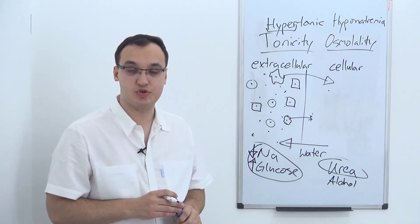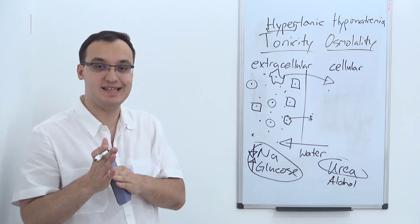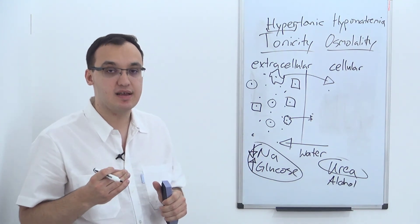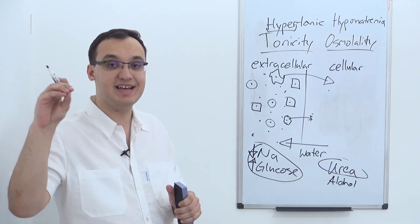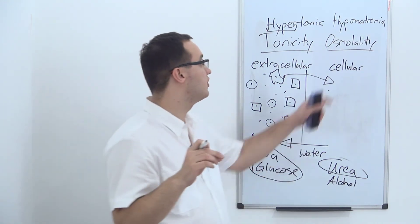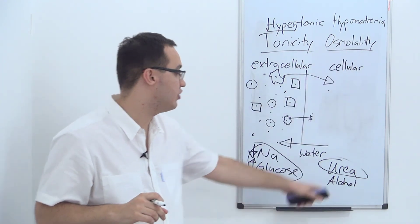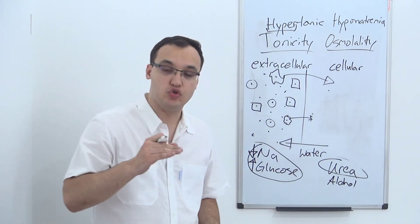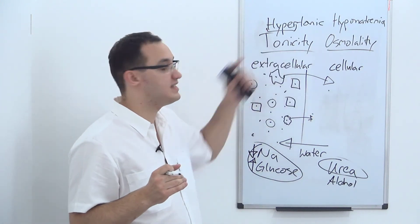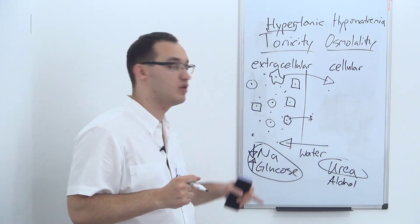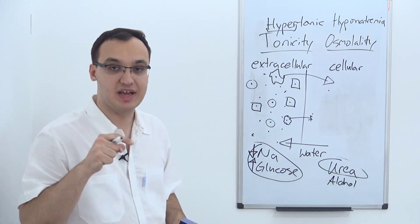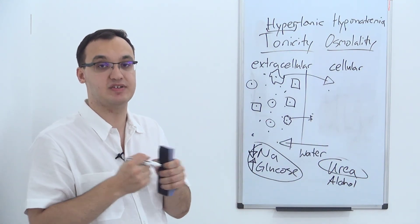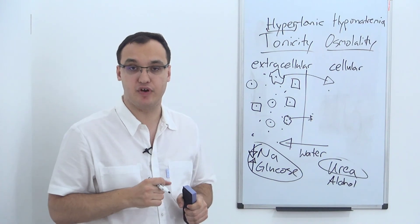When you have a question about tonicity versus osmolality, remember this: molecules that can penetrate the membrane — like urea — affect osmolality only, because urea just moves to the other side. Molecules that affect tonicity — like sodium and glucose — cannot move through the membrane, and therefore they attract water, pulling it from the cells into the extracellular vascular space. Thank you very much for listening.